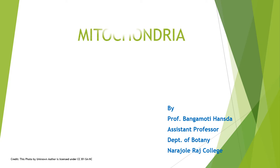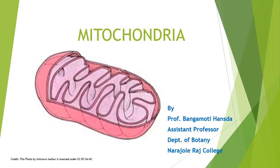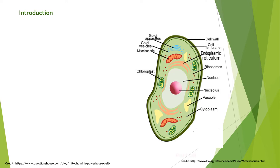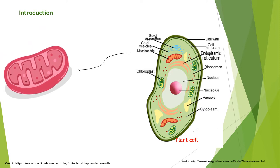Today we will learn about mitochondria. In this slide I will give you a brief introduction. This is a plant cell and this is the mitochondria. It is a double membrane bound organelle found in most eukaryotic organisms. It is also known as the powerhouse of the cell.